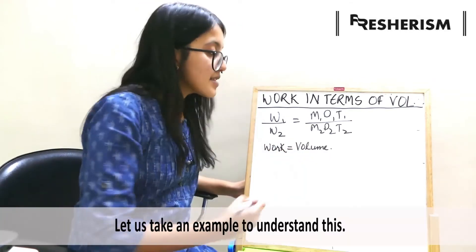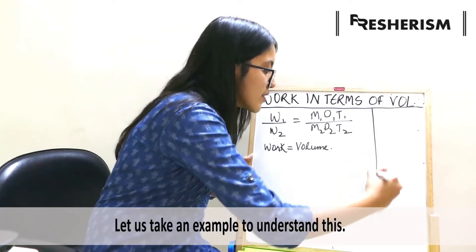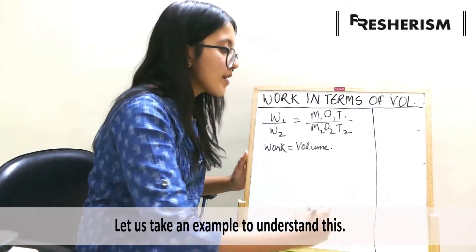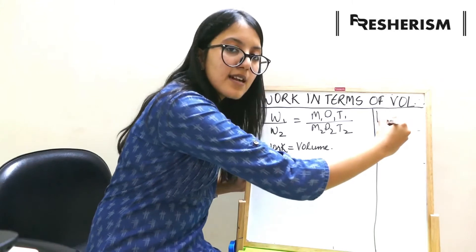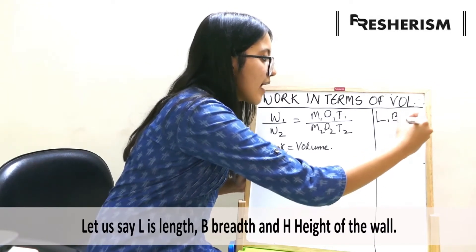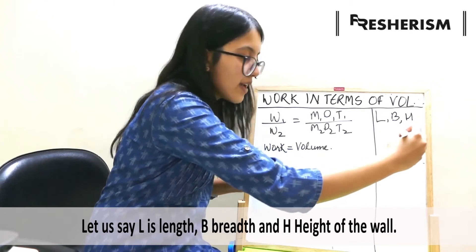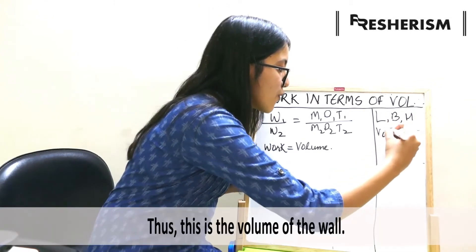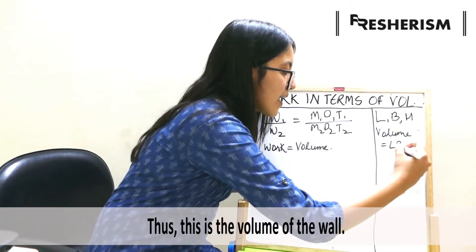Let us understand this first. If a certain wall is to be built, then l is considered as the length of the wall, b as breadth, and h as the height of the wall. Hence, the volume of wall will be l b h.